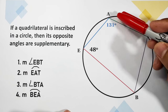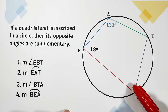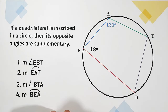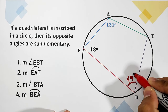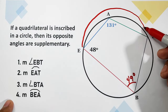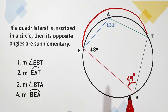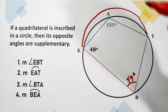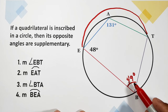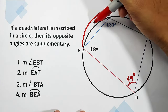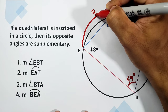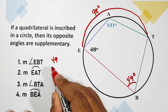The opposite angle of angle EAT is angle EBT. Since angle EAT and angle EBT are opposite angles, they are supplementary. So 180 minus 131 equals 49 degrees — that is angle EBT. For number two, arc EAT is the intercepted arc of angle B. Since the inscribed angle is 49 degrees, we multiply by 2: 49 times 2 equals 98 degrees.